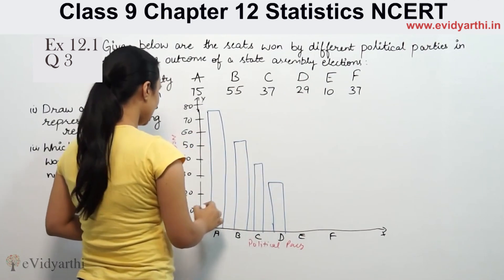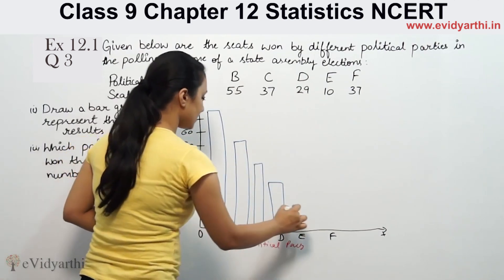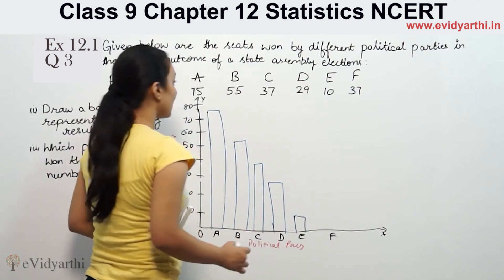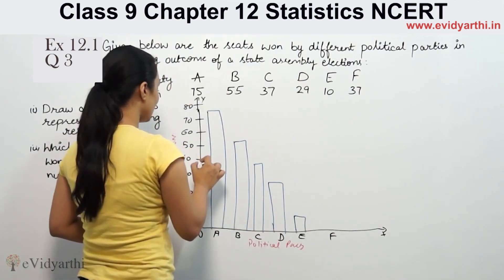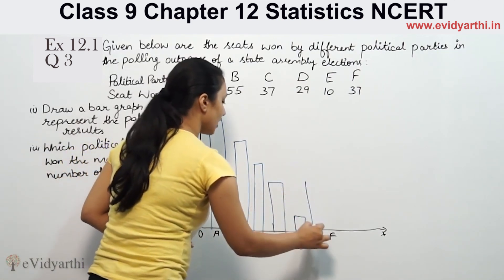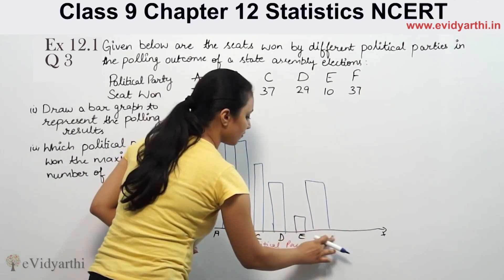E is 10. 10 is right here. And F is 37, which means F's bar goes up to 37. That is F.